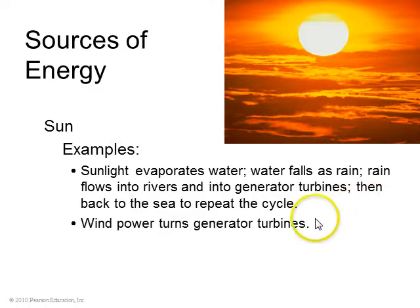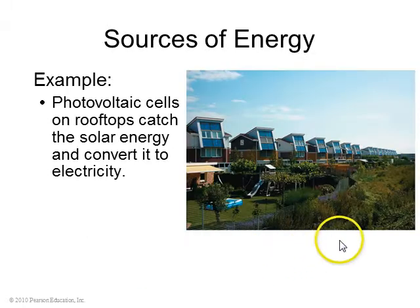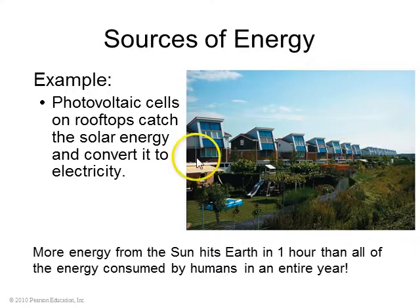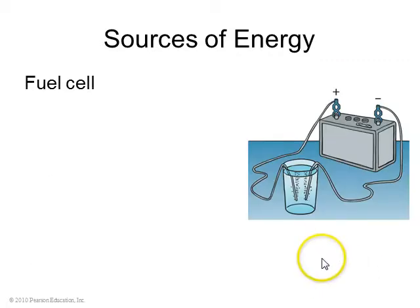Also, the sun doesn't heat every part of the earth equally, so it generates wind, which can turn turbines. You can also get sunlight to produce electricity directly through photovoltaic cells, like solar energy panels on rooftops, that can make electric energy directly. And it turns out that more energy from the sun hits the earth in one hour than all of the energy consumed by humans in an entire year. So, that's a good source of energy.